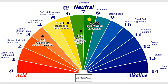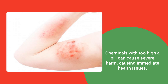The pH level refers to the acidic or alkali level of a product. Some products will burn your skin because they are more caustic and have a poor pH level. This is a result of a very acidic or very alkaline chemical. Either way, chemicals with too high a pH can cause severe harm, causing immediate health issues to the user.